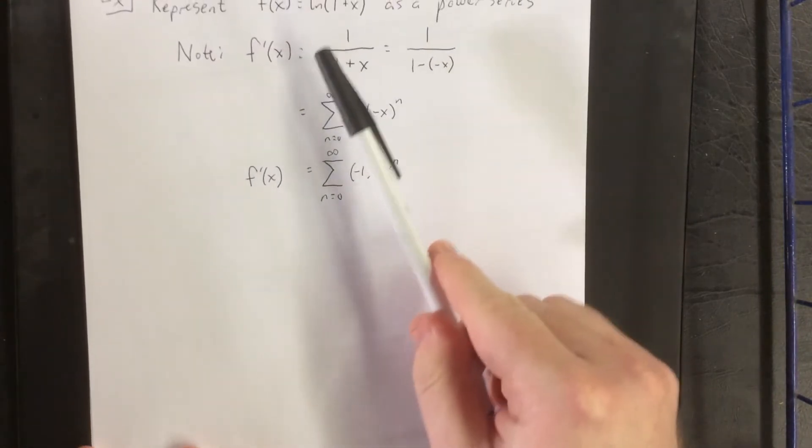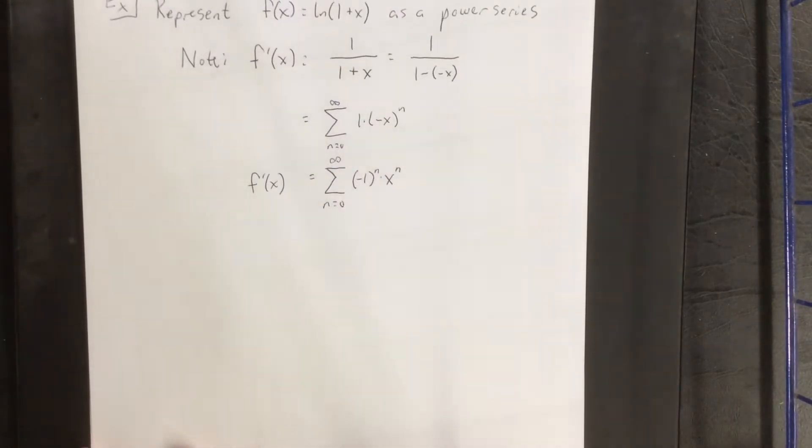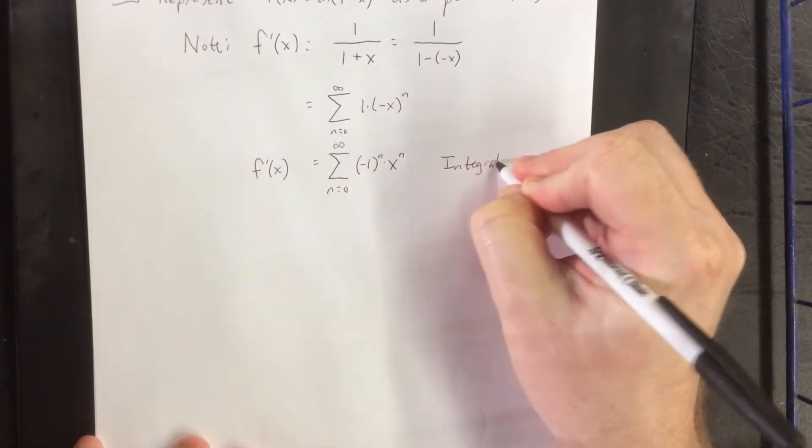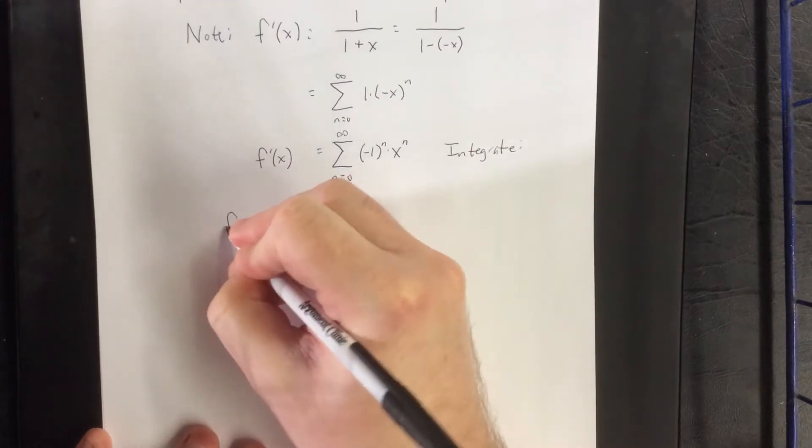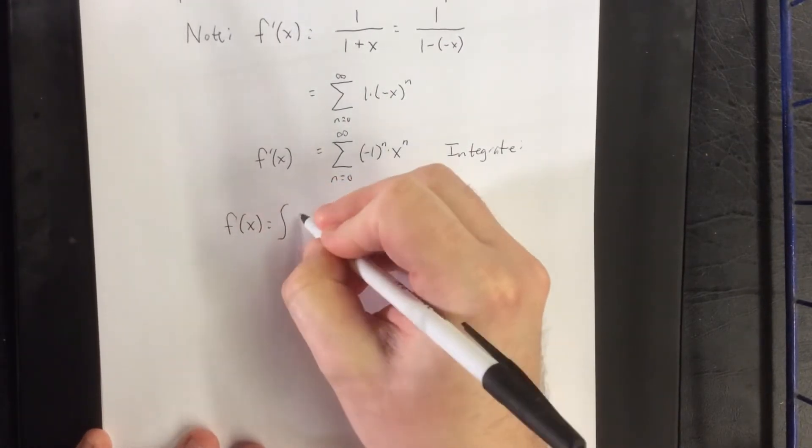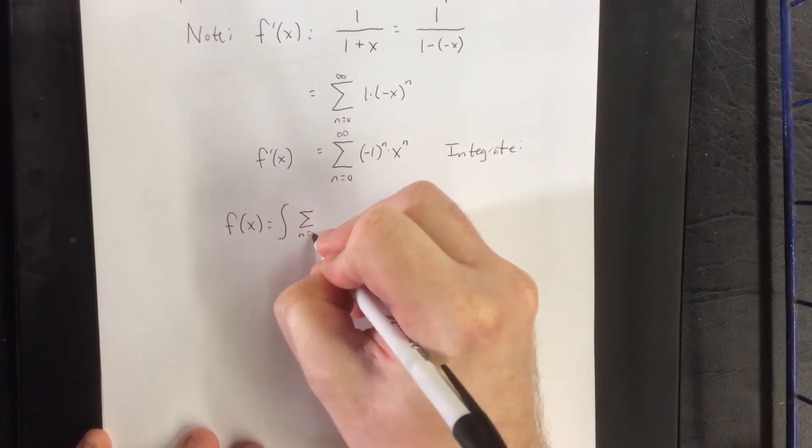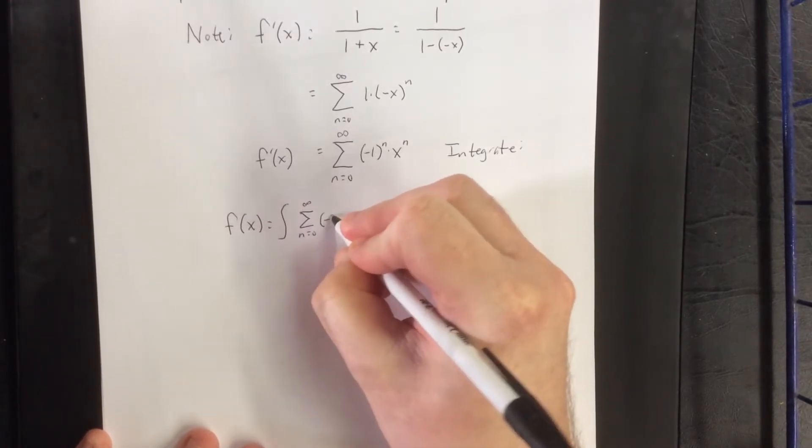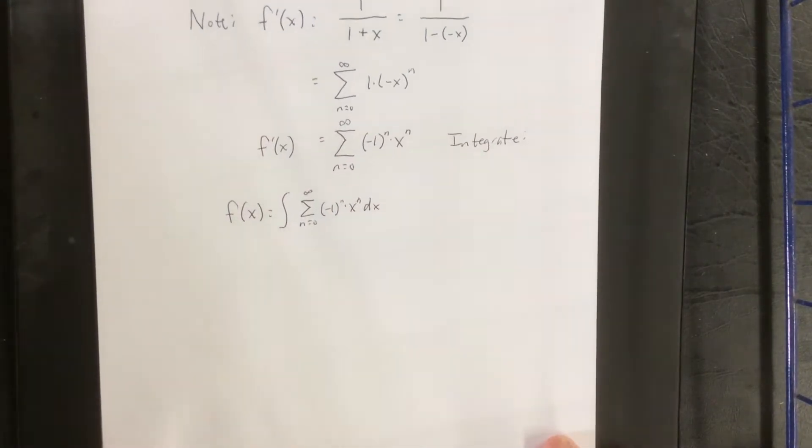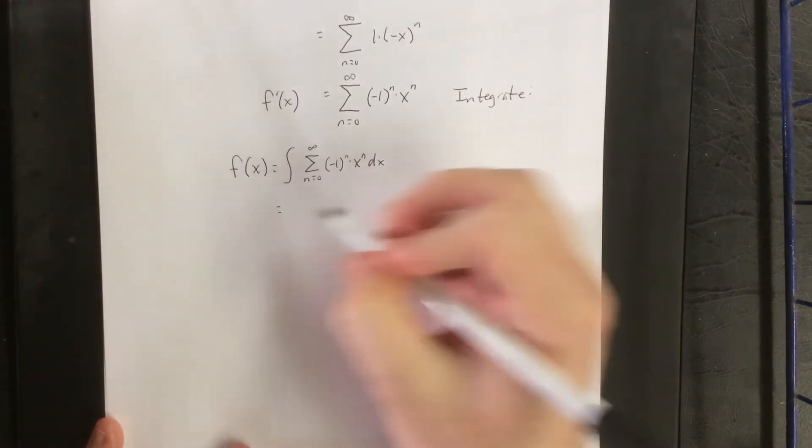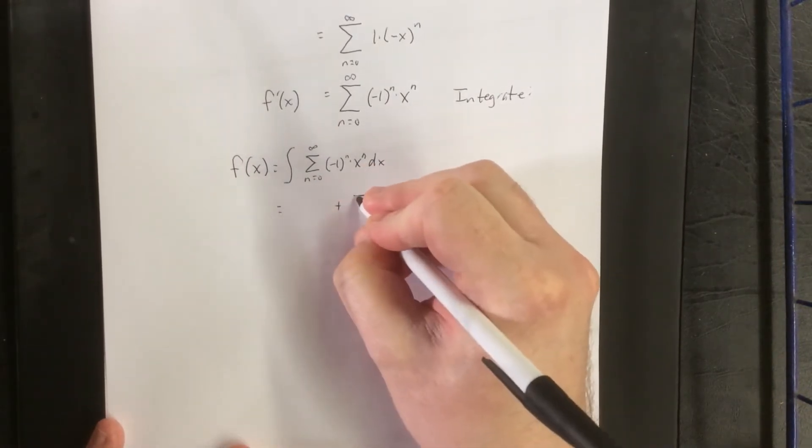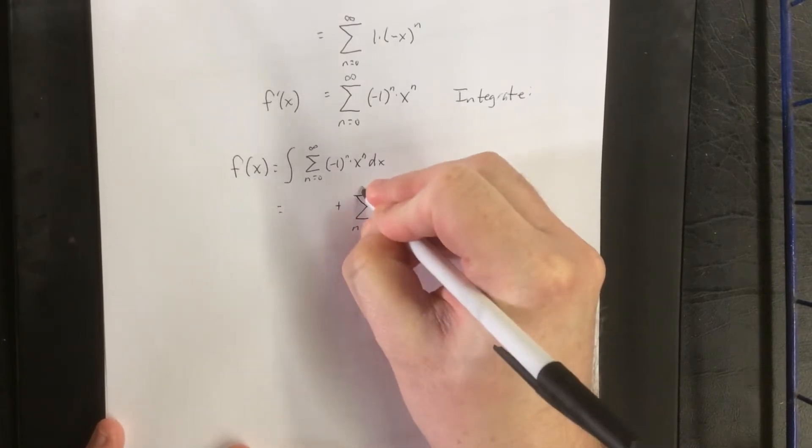To get it back to the natural log of 1 plus x I'm going to integrate both sides. By integrating this first derivative I will be back to the original function. So this will be the integral of the sum from n equals 0 to infinity of negative 1 to the n times x to the n dx. Now with that in mind we can apply the power rule. The power rule says that the power of x will go up by 1 and will divide by the new power.